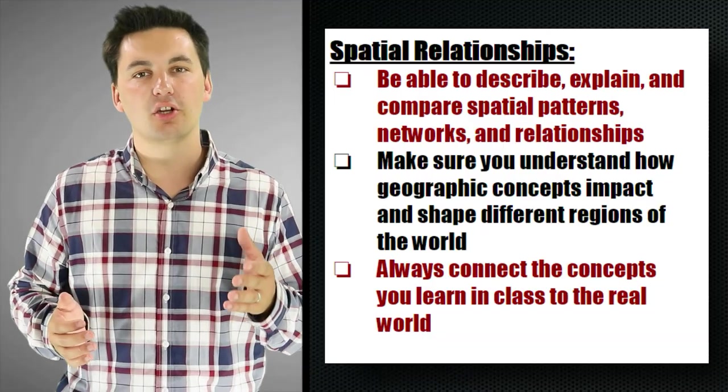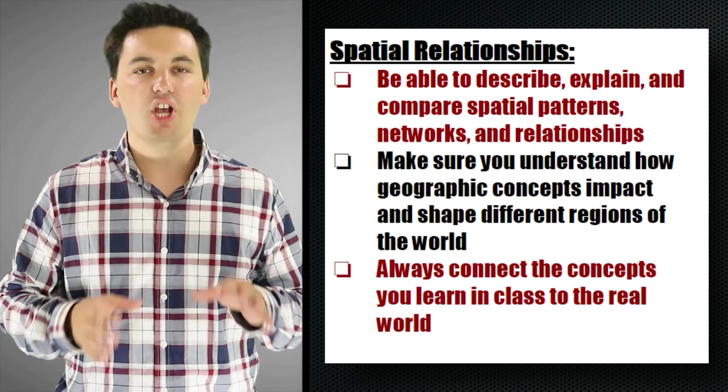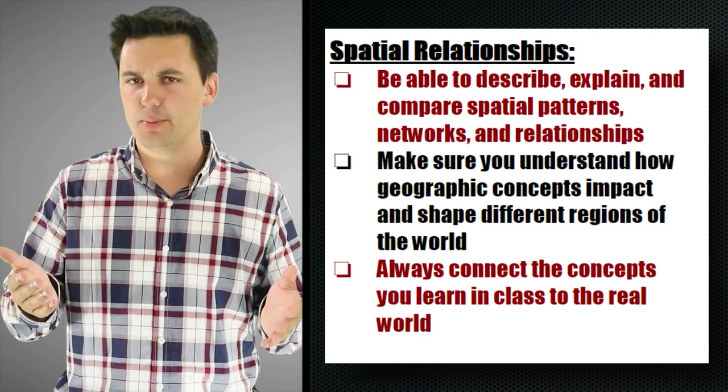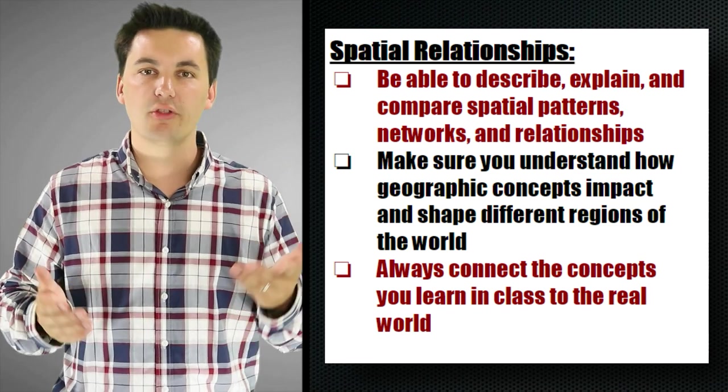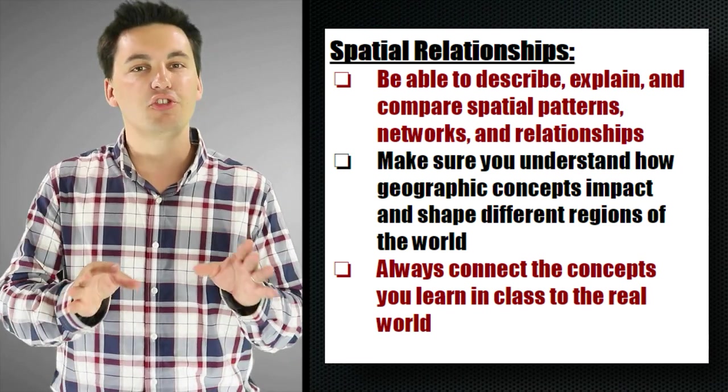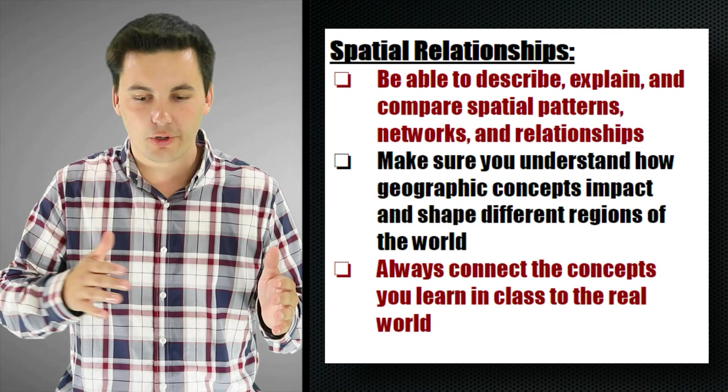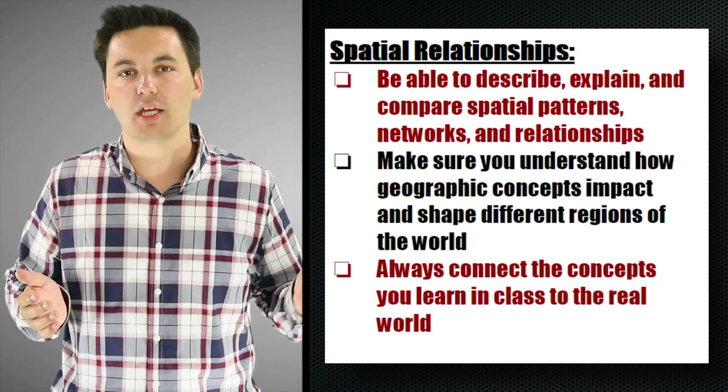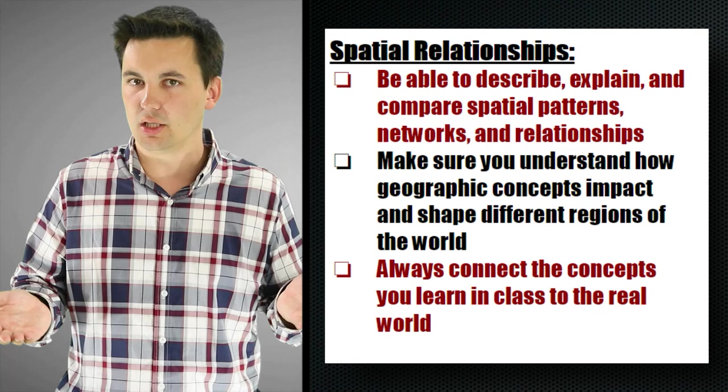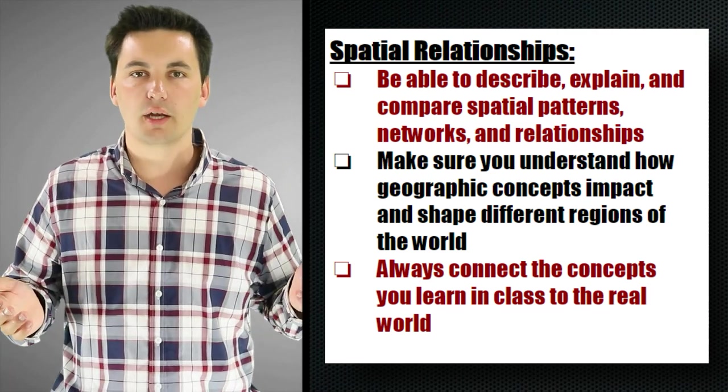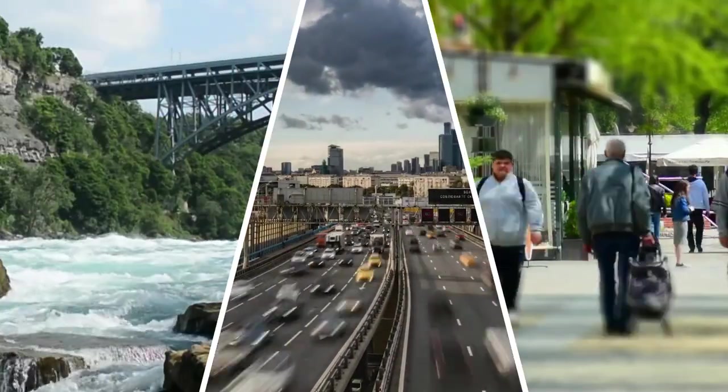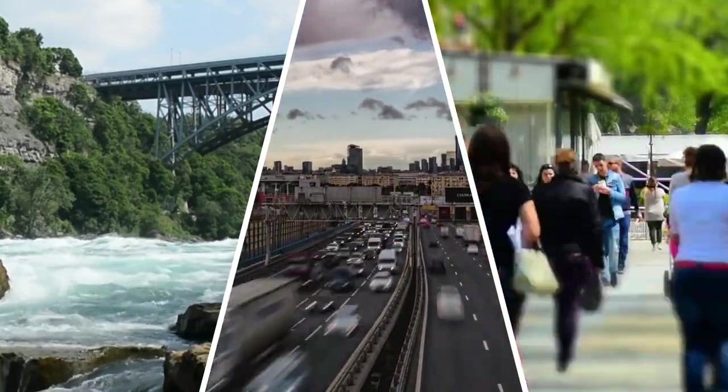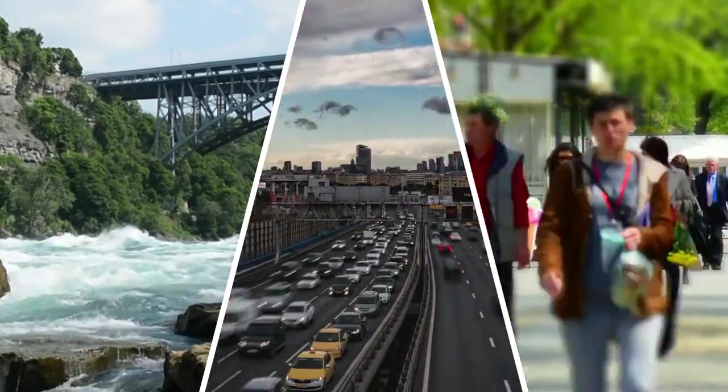The next skill you're going to want to hone is the ability to know spatial relationships. Geographers are always trying to better understand how different places and people and systems connect, how they impact each other, how they influence each other. And this is going to be important for you to do as you learn all these different concepts throughout the class. Why is it that a city might locate in place A, but not place B? What situation and site factors are influencing that? Is it the geography? Is it rivers? Is it trade? Is it the culture? Is it the location of other cities? And once these cities are created, how do they interact with each other?